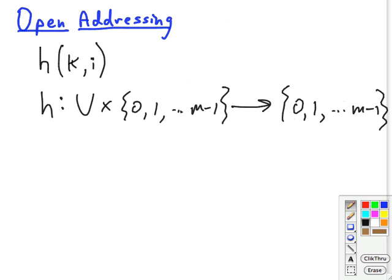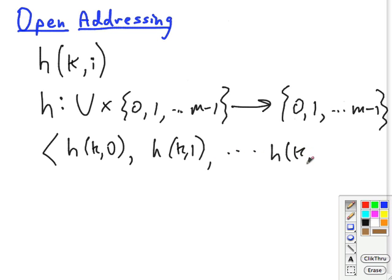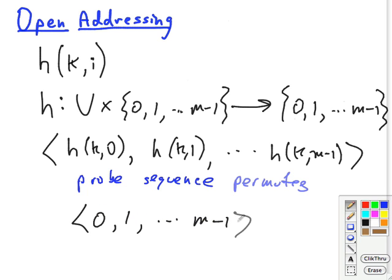We're going to require that the probe sequence, here's a probe sequence, h of k i, the first attempt, h of k, the second, the 0th attempt, the first attempt of the probe, up through h of k m-1. If this fails, the table is full. So we want this probe sequence to have some permutation of the values of the positions from 0 to m-1. So another way to state this requirement is that all of the positions are visited. Of course, you want it to check every possible place.